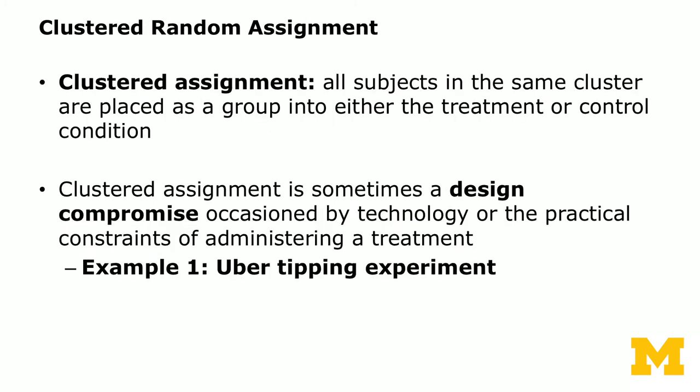The next topic is clustered random assignment. In clustered random assignment, all subjects in the same cluster are placed as a group into either the treatment or the control condition, and it decreases power. This should not be done unless you have to. Most of the time, experimenters use clustered random assignment because they have to.